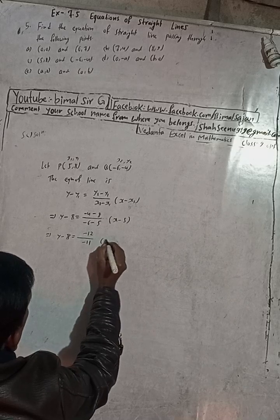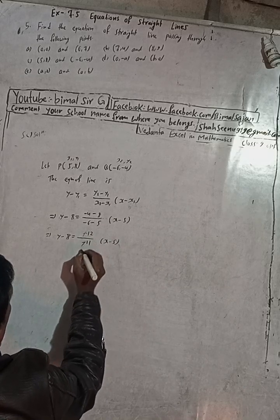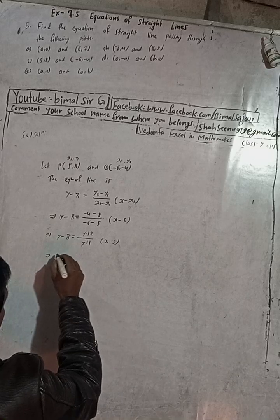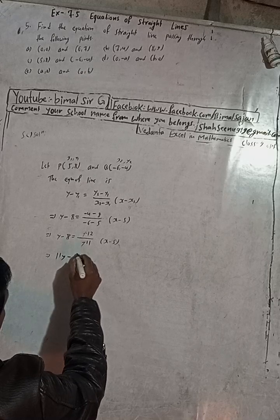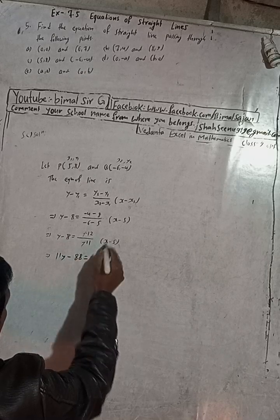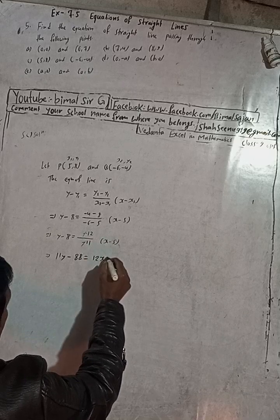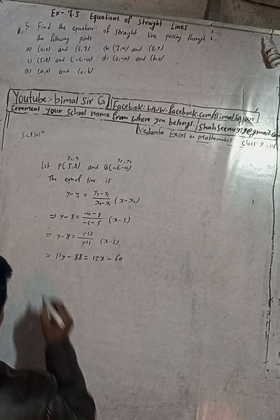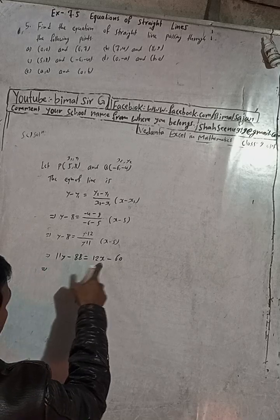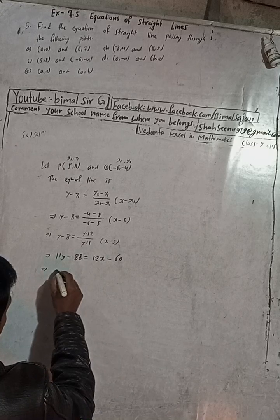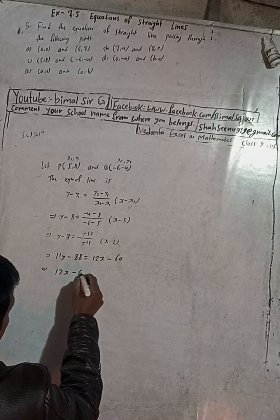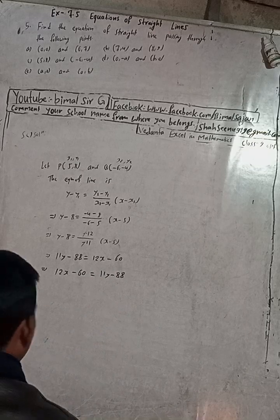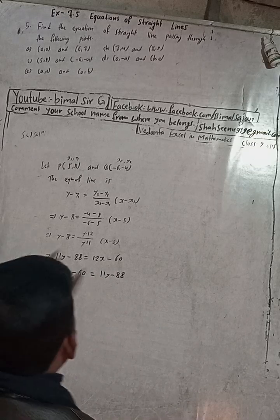The negatives cancel, so we get: 11 times (y minus 8) equals 12 times (x minus 5). Expanding: 11y minus 88 equals 12x minus 60. Now rearranging, taking 12x to the left side and 11y terms to the right.